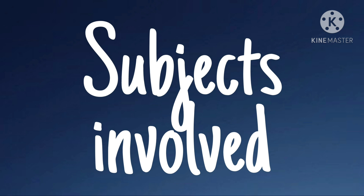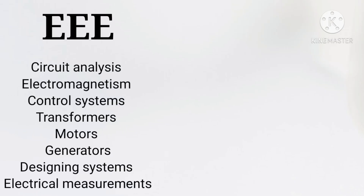In the first year, there are common subjects like English, C programming, and engineering drawing across both branches. In the second year, you look at core subjects: circuit analysis, electromagnetism, control systems, transformers, motors, generators, designing systems, and electrical measurements.